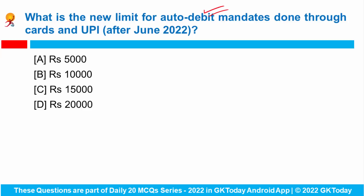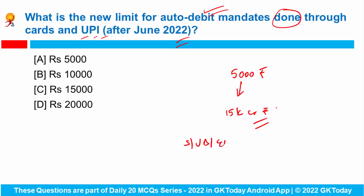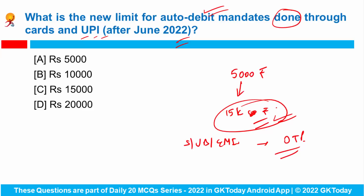Next question: What is the new limit for auto debit mandates done through cards and Unified Payment Interface after June 2022? Previously, the limit for auto debit mandates through cards and UPI was only ₹5,000. Now, the Reserve Bank of India has increased it to ₹15,000. This means customers doing recurring transactions like subscriptions, utility bills, and EMIs don't need OTPs every time when below the ₹15,000 limit. So the correct answer will be ₹15,000 rupees.